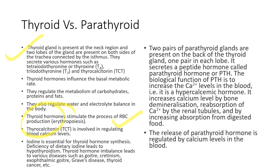Thyroid hormone also stimulates the production of red blood cells. Calcitonin maintains calcium levels in the blood. You may have learned about iodine in earlier classes — iodine deficiency causes goiter, and affected persons can become mentally impaired. Iodine is essential because thyroid hormones are produced with the help of iodine. Deficiency of dietary iodine leads to hypothyroidism. Thyroid hormone imbalance can lead to goiter, cretinism, exophthalmic goiter, Graves' disease, and thyroid cancer.